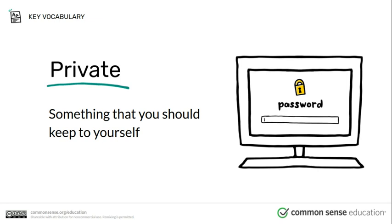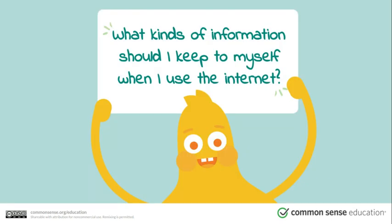An example of private information is a password. What kinds of information should I keep to myself when I use the internet? This is anything personal that can identify you. You don't want people to be able to find you from the information you give on the internet, because that can make you unsafe. You don't want to use your real name — use a username or an alias instead. You don't share things like your address, your phone number, a description of you, your parents' names, your telephone number, or the school you go to. Keep that information private, especially if you're playing games or chatting with someone, because that's when the information can be used in a negative way.